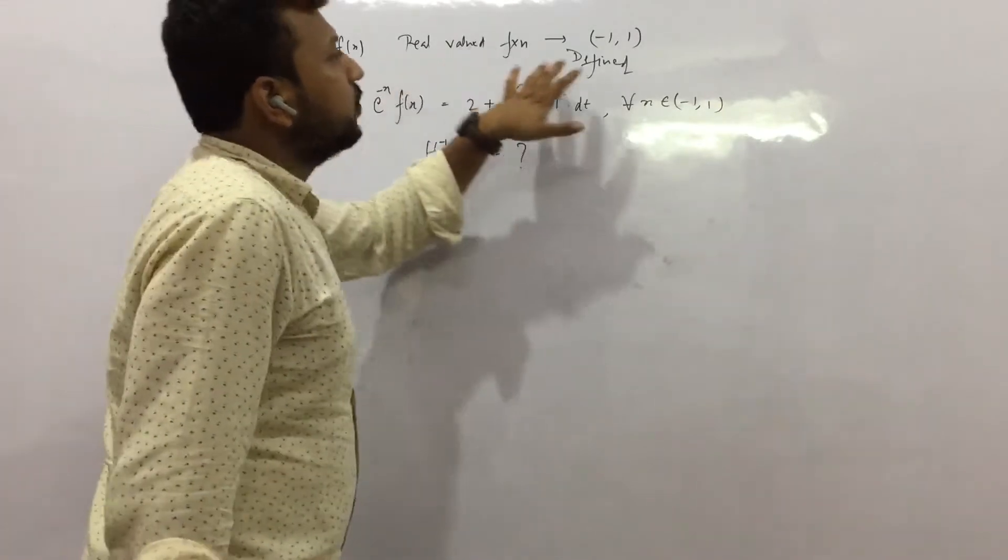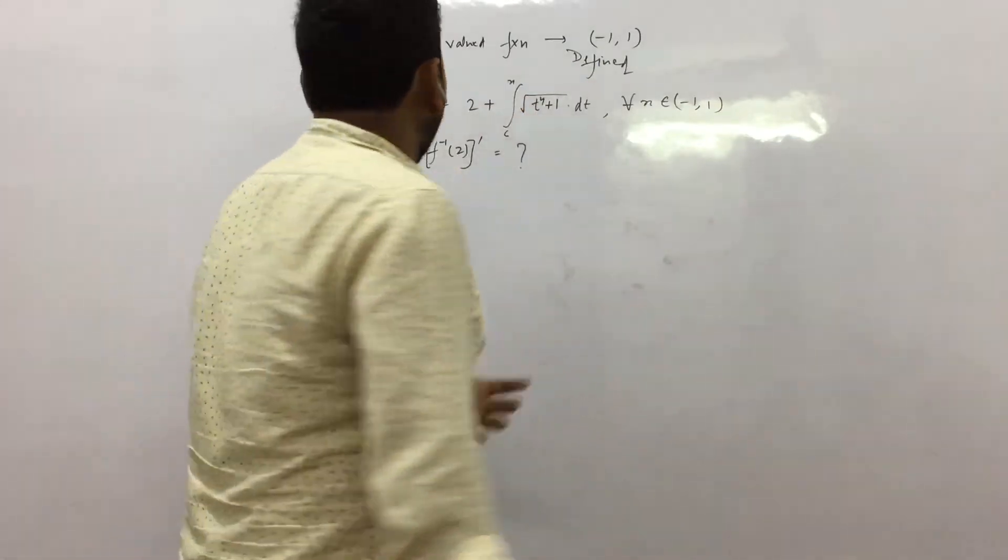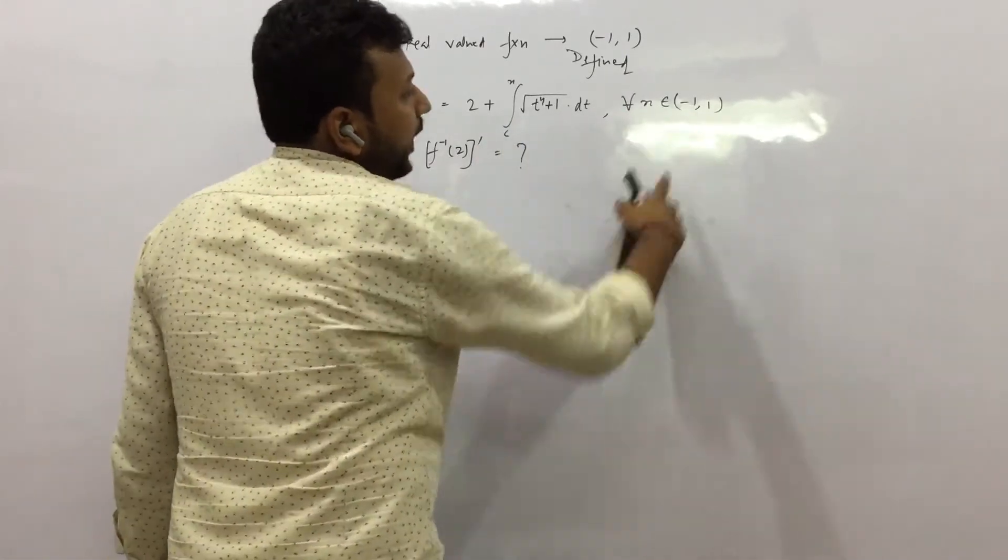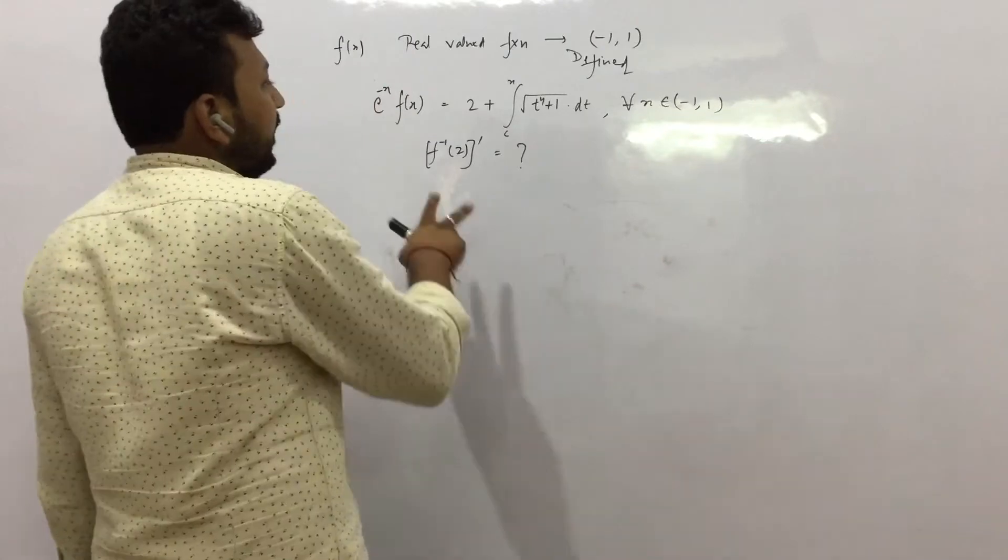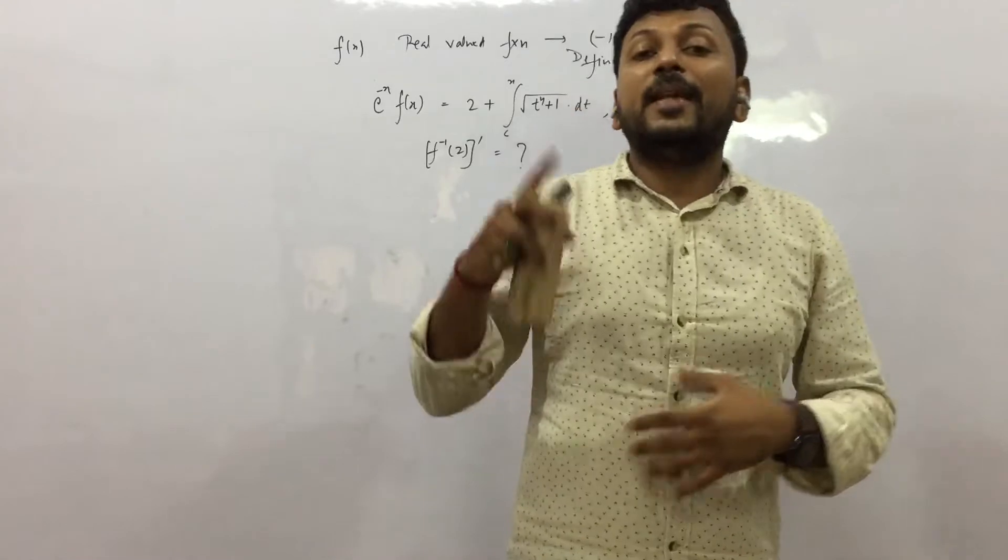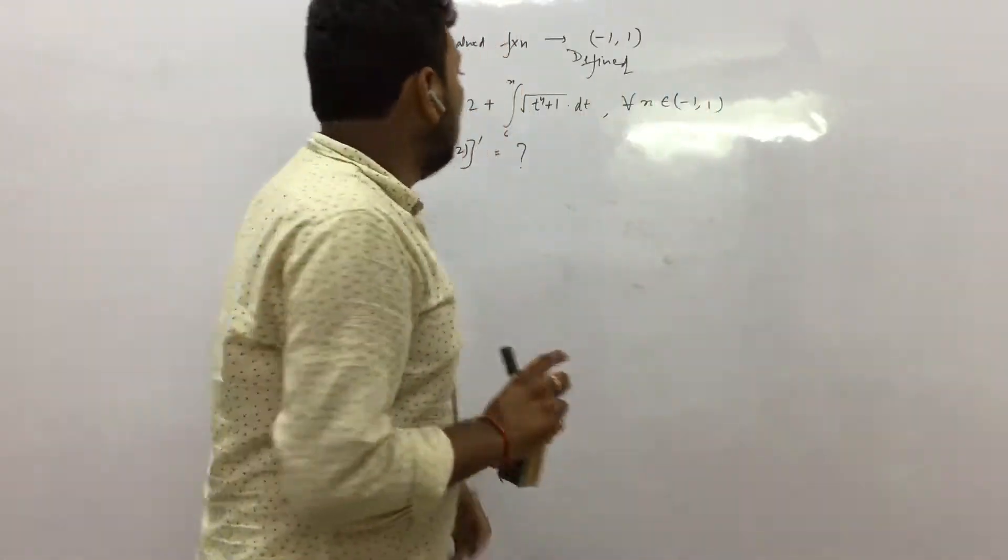f(x) is a real valued function defined on (-1,1) and this is the statement that is given for all x belongs to (-1,1). We need to find f inverse dash at 2, that means the derivative of the inverse function at x equals 2.